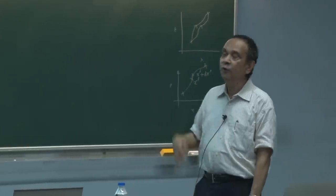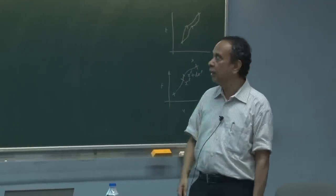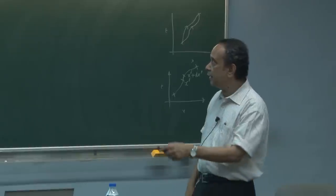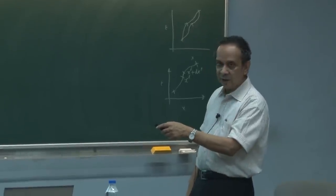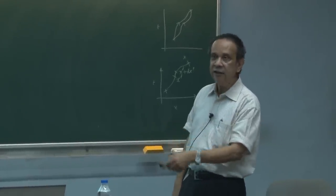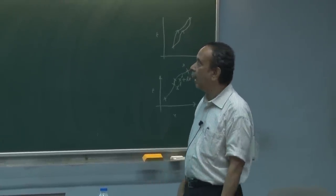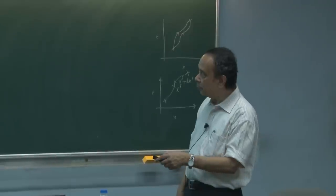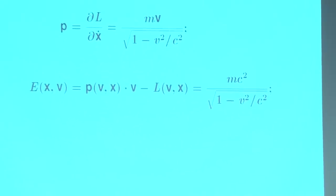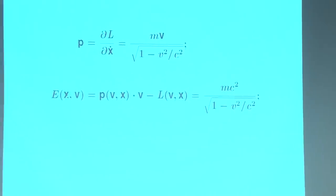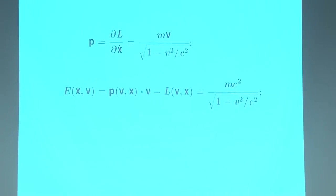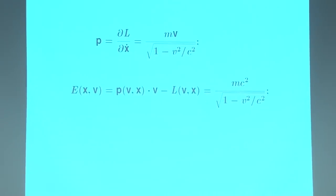For the relativistic case, taking the Lagrangian as the square root of 1 minus v-squared over c-squared, you can compute the energy as p times v minus L. Expressing it as a function of momentum rather than velocity yields the relativistic energy-momentum relation.